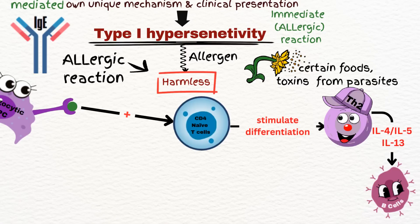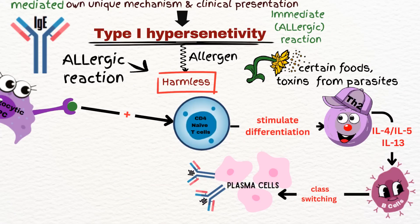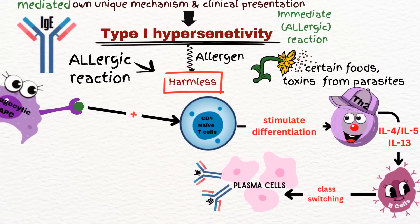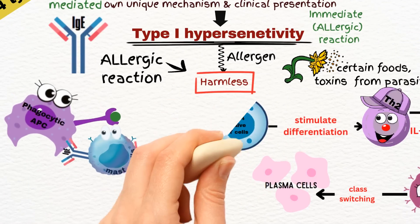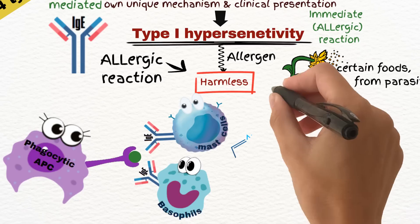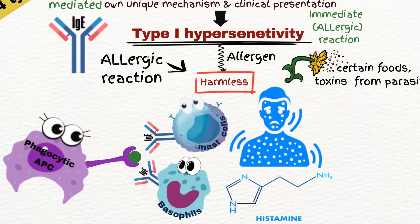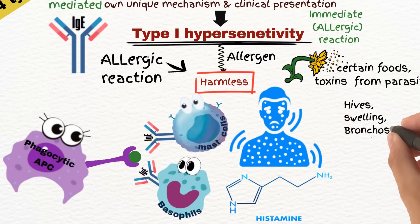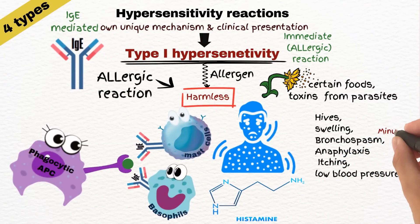Activated B cells undergo class switching and differentiate into plasma cells that produce allergen-specific IgE antibodies. The immunoglobulin E binds to basophils and mast cells, sensitizing them to the allergen. When the body is exposed to the same antigen again, these basophils and mast cells release histamine and other mediators. This leads to immediate symptoms like hives, swelling, bronchospasm, anaphylaxis, and itching.